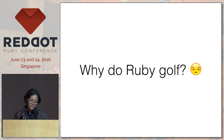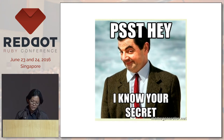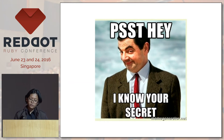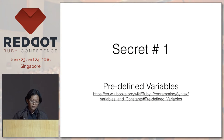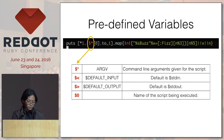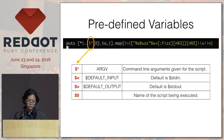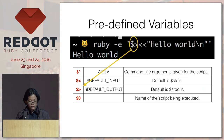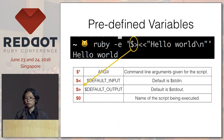So why do we need to do RubyGolf? Well, it is to know some Ruby secrets — the lesser known features of Ruby. The first secret I discovered were predefined variables. You can go to this site or just search. In the golf code, it's using dollar-asterisk, which is actually a shorthand for argv. These are some of the other variables that we have — there are a lot more, so you can just look at the documentation.